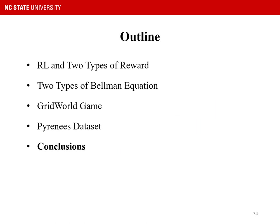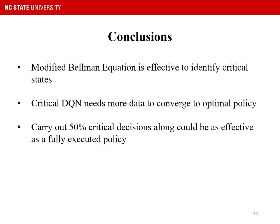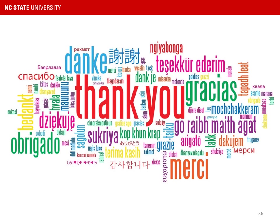In conclusion, we learned that the modified Bellman equation is effective to identify critical states, but critical DQN needs more data to converge to the optimal policy. Carrying out 50% critical decisions alone could be as effective as a fully executed policy. Thank you very much.